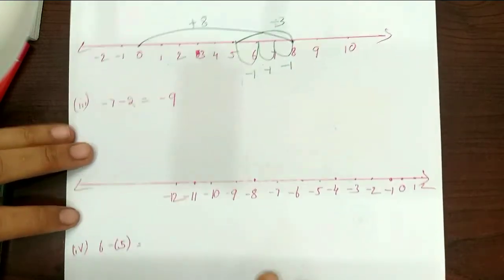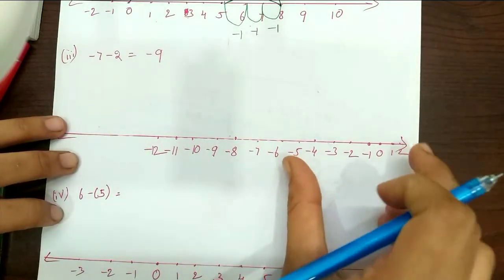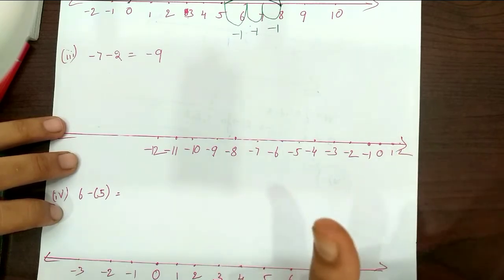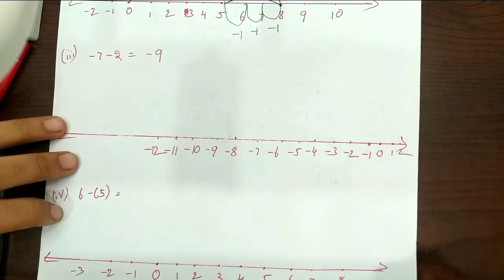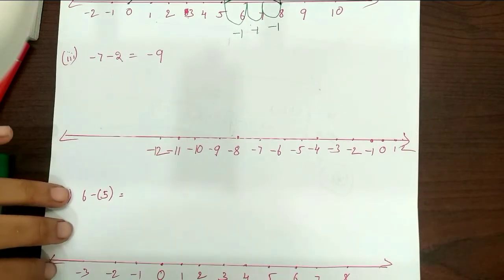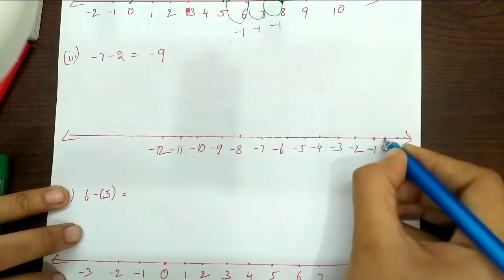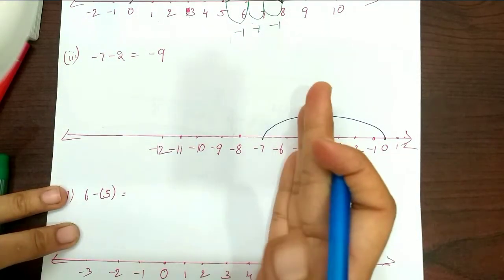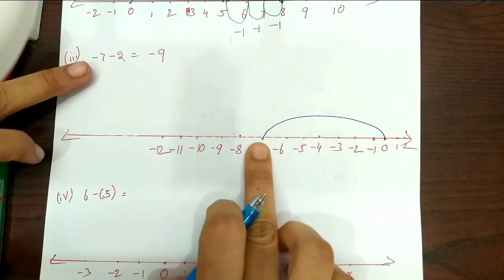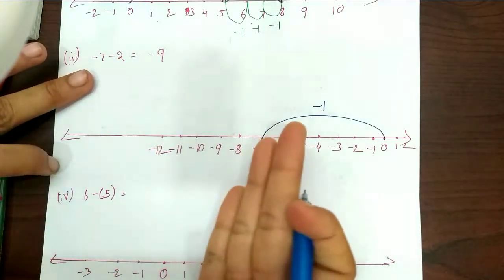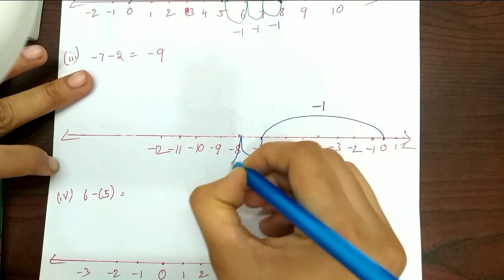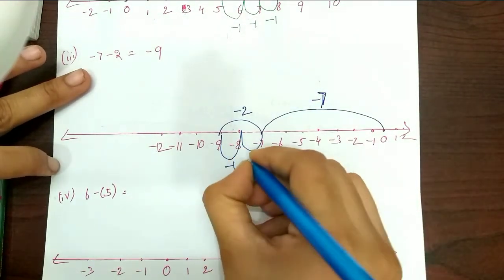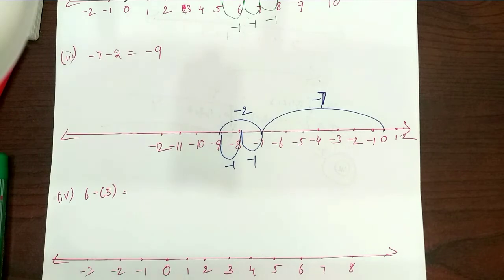Since the signs are different, we subtract. We get a negative value result. On the number line, start at 0, move to minus 7. Then move 2 units to the left since we are adding minus 2. Total: minus 7 plus minus 2 equals minus 9. We move left side for negative values, giving us the final answer.